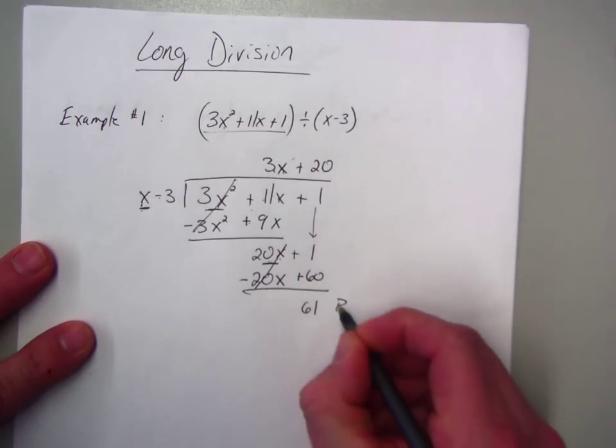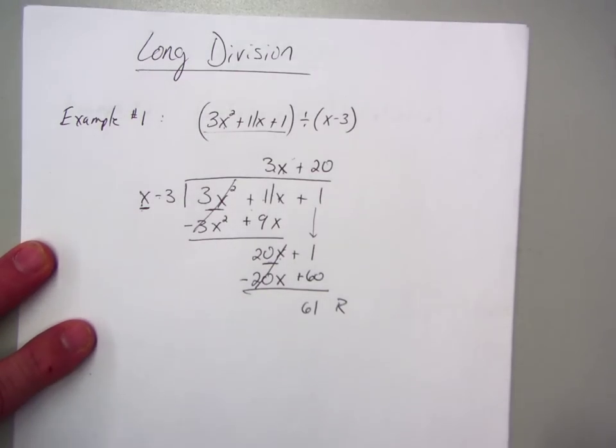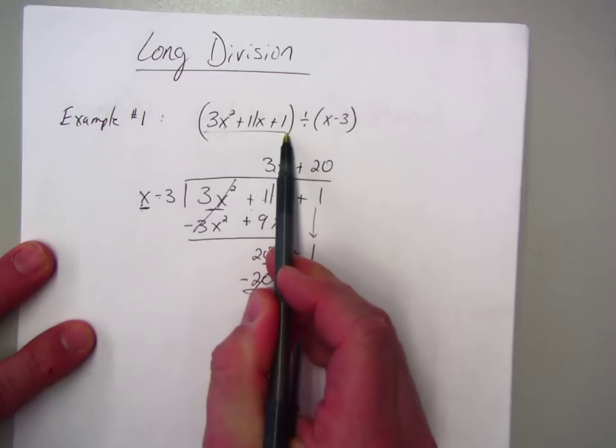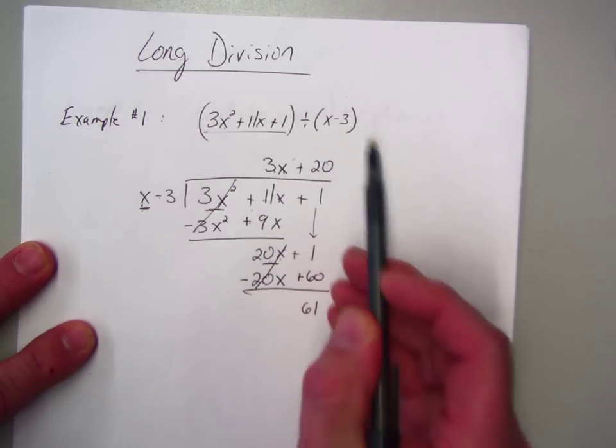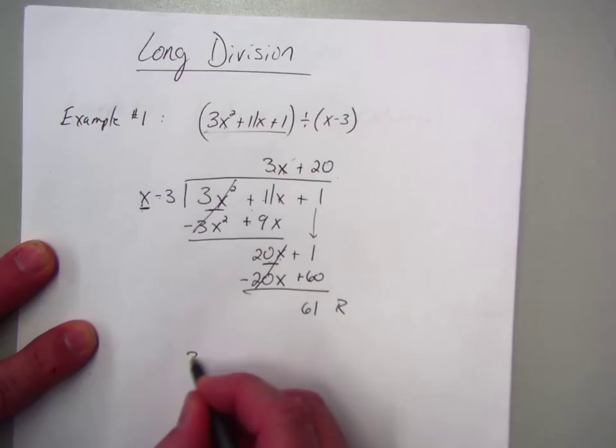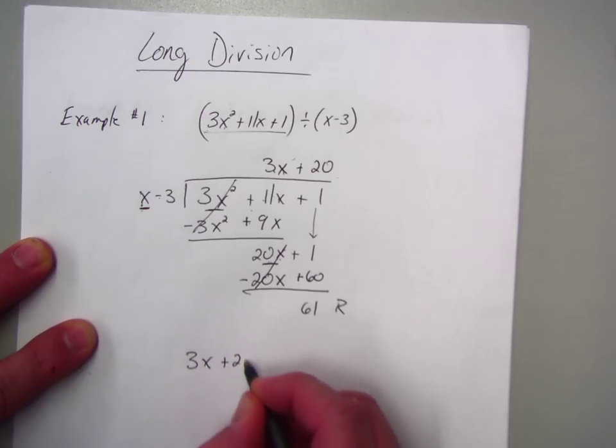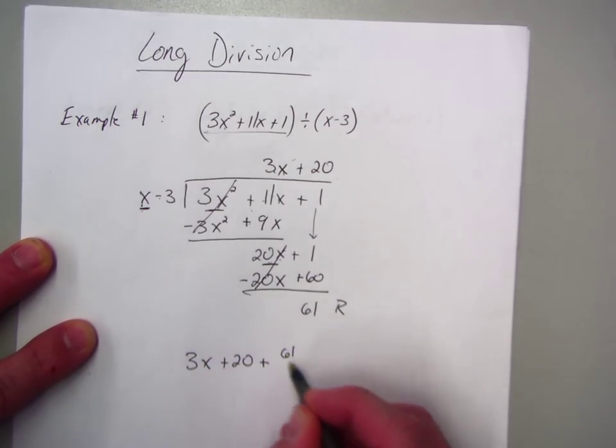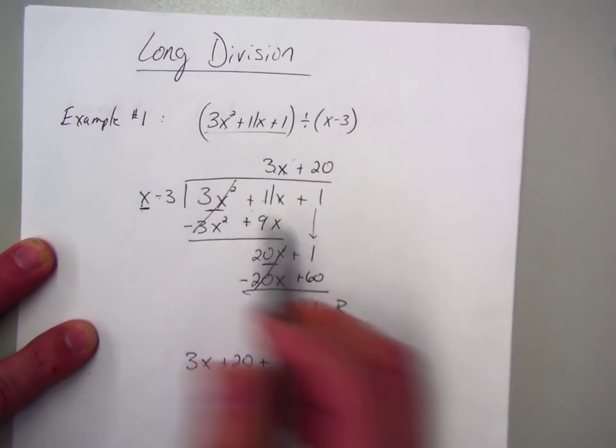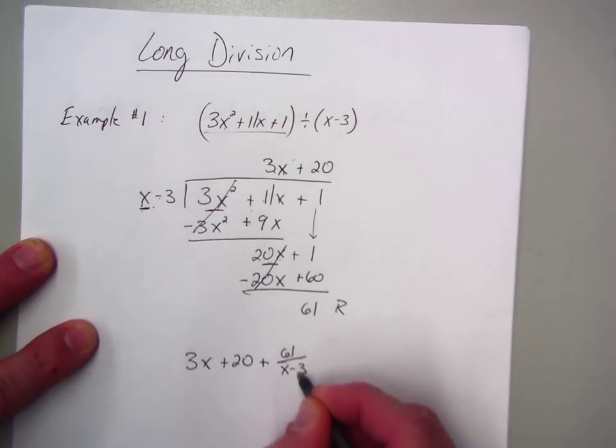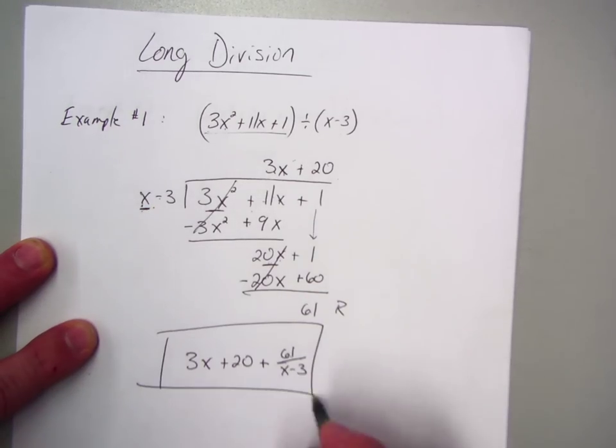So, this means this is my remainder. I have a remainder of 61. So, when I take this quadratic, and I divide it by linear, I get this new polynomial. Let me write it like this. 3x plus 20 plus the remainder, 61. And remember, in regular long division, you take the remainder, and you always put it over what we divided by. And this will be your answer.